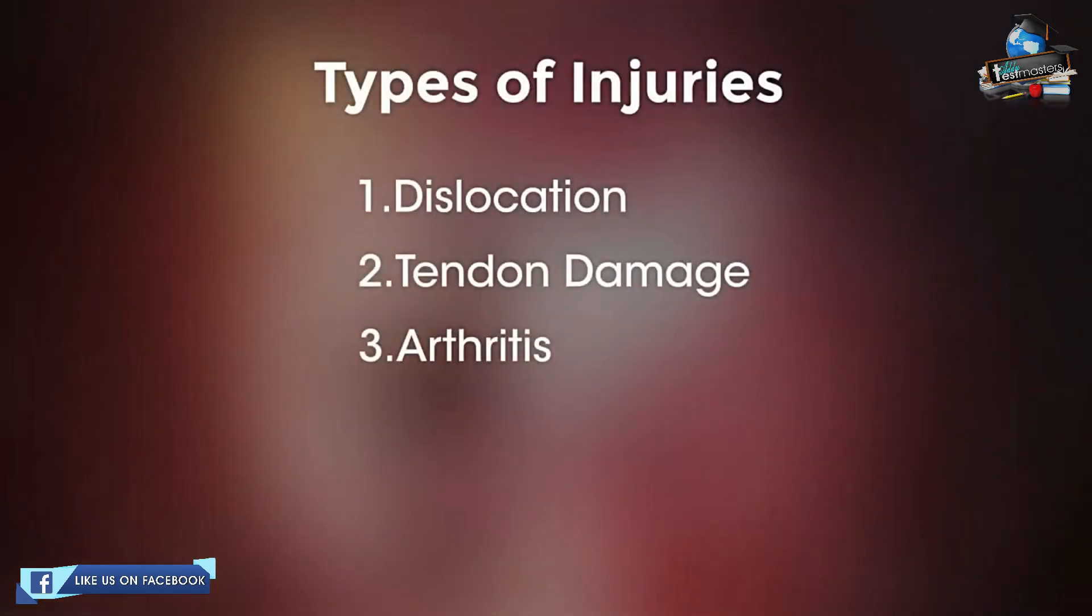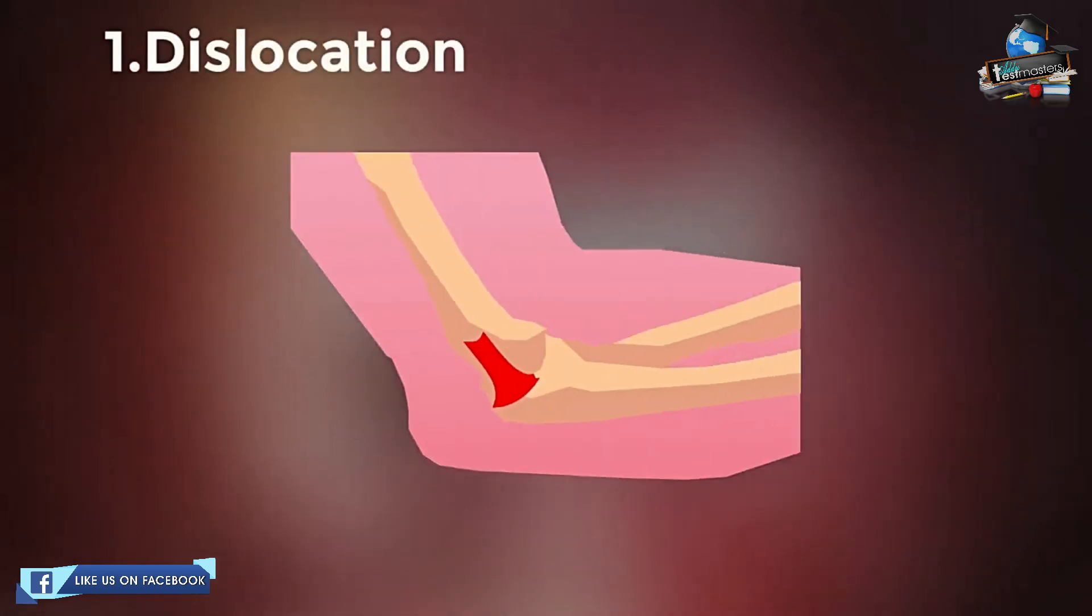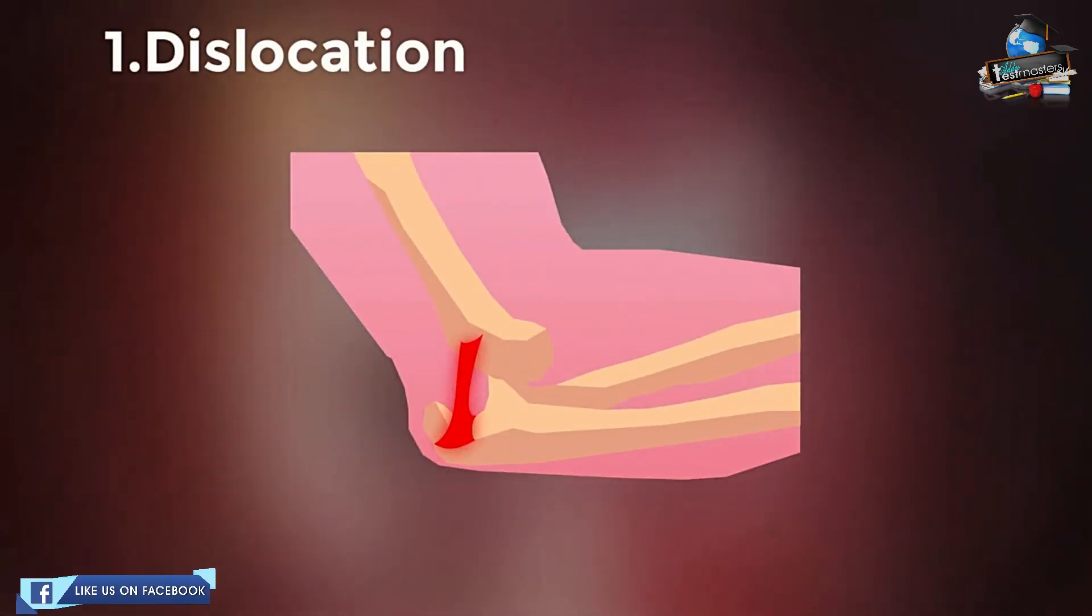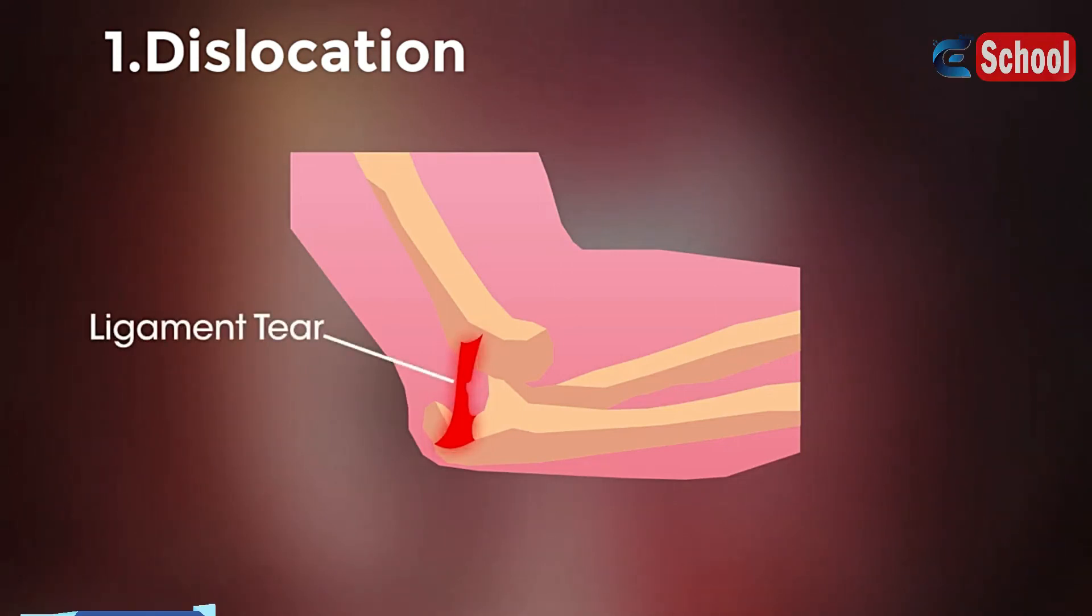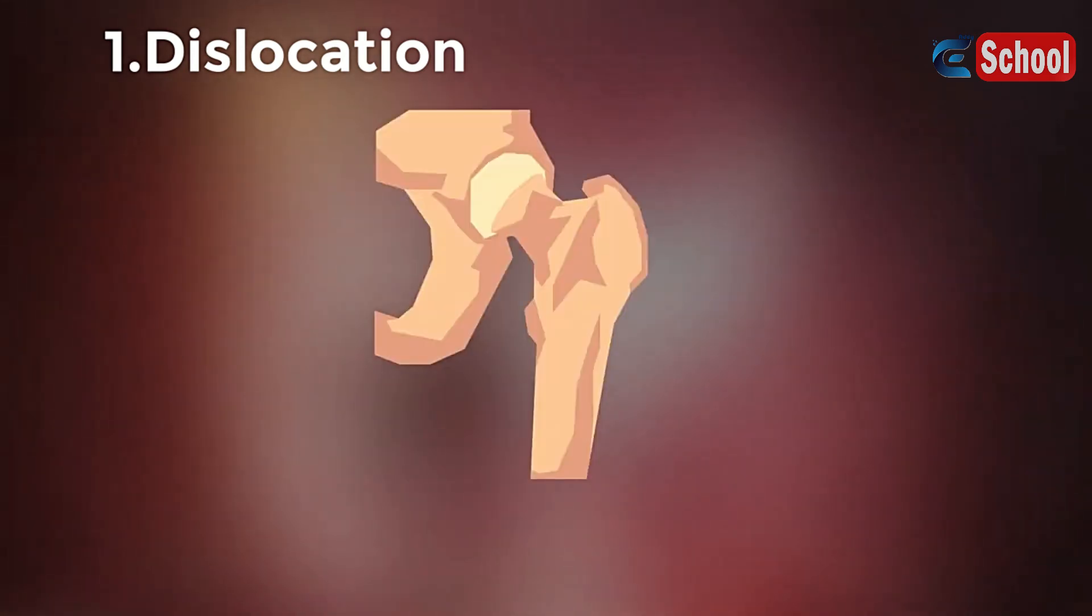Let's end with a quick look at injuries. Joints can be dislocated. This is when a bone and a joint become displaced as a result of a large force. Often the ligaments are also damaged in a form of a sprain. The ball and socket joints of the shoulders are extremely prone to dislocations.